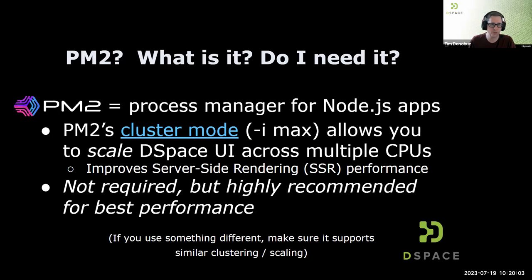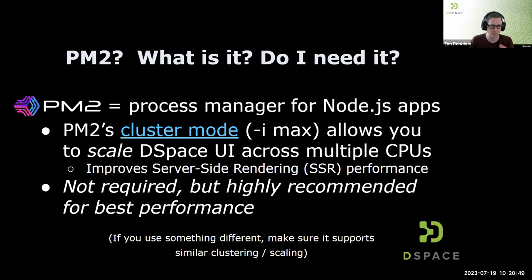PM2 is a brand new tool within DSpace 7's user interface. It's a process manager tool that runs any Node.js app, and the front end is a Node.js application. We recommend installing it with PM2 — it's part of the installation instructions. It's not a required tool, but what we like most about PM2 is the cluster mode, which allows you to scale the user interface and get much better performance than other Node.js process manager tools.